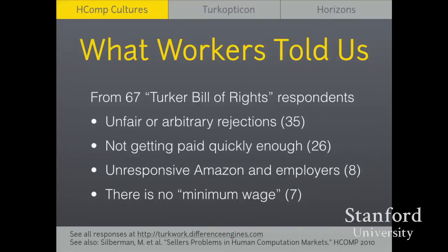I was in an art class, not a social science class, so I put out a non-rigorous, open-ended survey asking workers: if you could have a Turkers Bill of Rights, what would you want in it? I got 67 responses. Thirty-five complained about unfair or arbitrary rejections. Amazon gave employers a lot of discretion about whether they had to pay or not — if employers didn't like the data work, they could say it was low quality or spam and refuse payment with no questions asked. Workers felt caught in a trap of overzealous rejections with no way for arbitration.